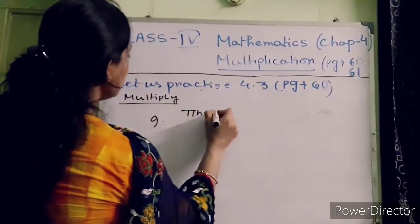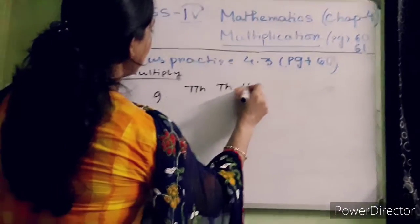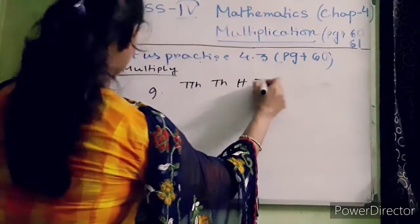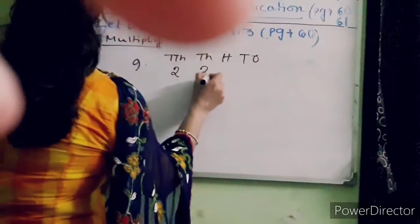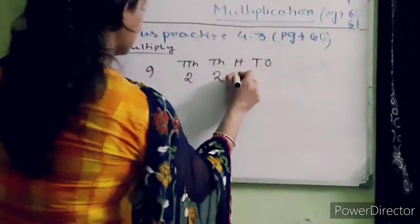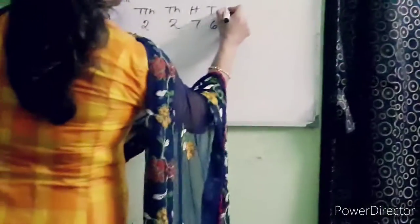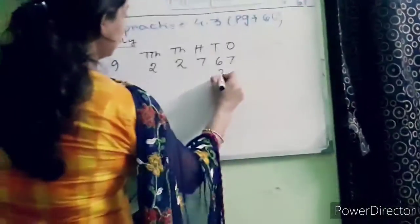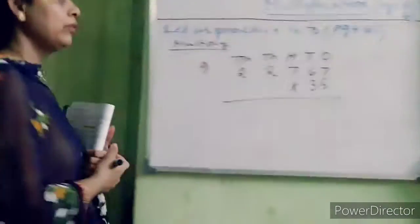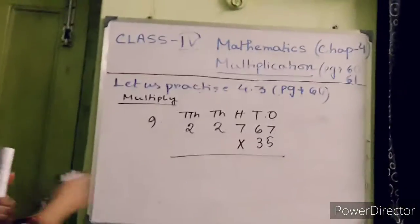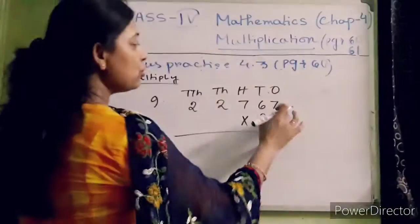Setting up the place value table: 10,000, thousands, hundreds, tens, ones. The number is 22,767. Multiply with 35. Now five into seven is thirty-five.